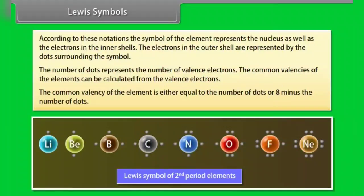The common valency of an element can be calculated from the valency electrons. The common valency is either equal to the number of dots or 8 minus the number of dots. For example, the common valencies of lithium, beryllium, boron, and carbon are 1, 2, 3, and 4 respectively, while those of nitrogen, oxygen, fluorine, and neon are 8 minus the number of dots, that is 3, 2, 1, and 0 respectively.